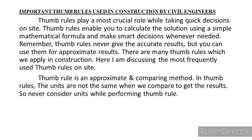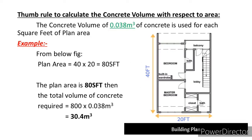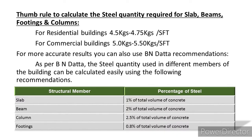Thumb rules to calculate concrete volume with respect to area: 0.038 cubic meters of concrete is used for each square foot of plan area. For example, for a given plan area of 40 feet by 20 feet — total 800 square feet — the total volume of concrete required is 800 into 0.038 meters cube, equal to 30.4 cubic meters.